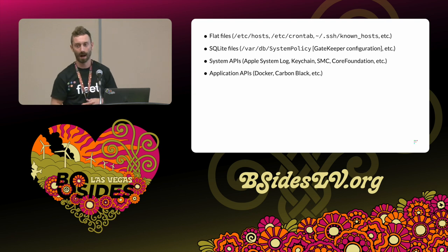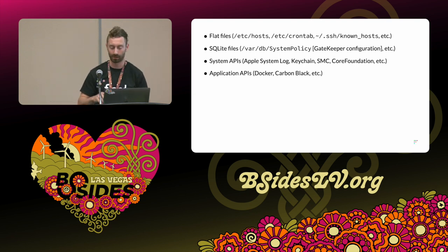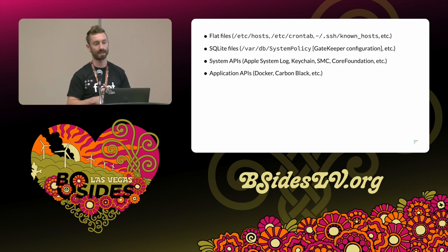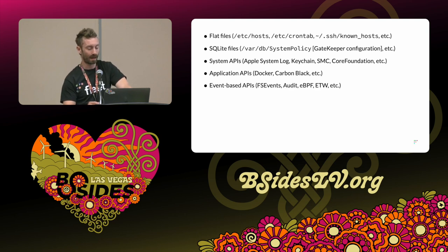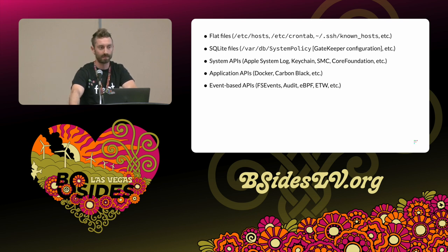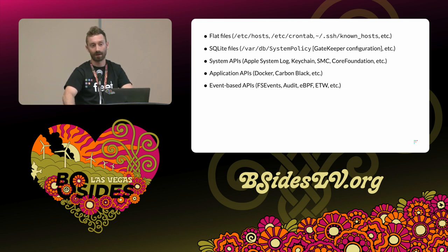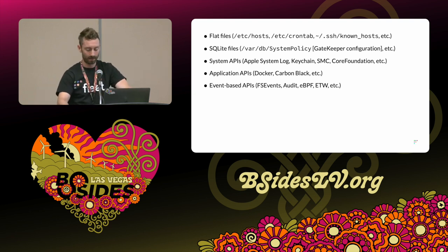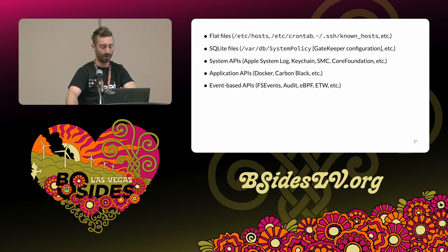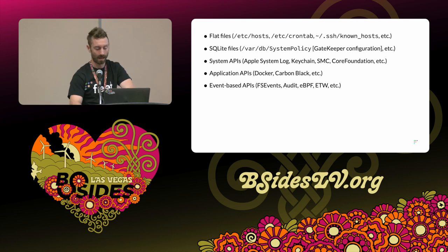There are also application APIs, so you can get things like status from Docker, from Carbon Black, and people have written extension tables that interact with things like CrowdStrike. And we can get event-based APIs — FS Events is used to do file integrity monitoring on some systems. The Linux audit and BPF subsystems are used to do process auditing and socket auditing. On Windows there's support for ETW, file integrity monitoring, and process auditing as well. And again, unified interface — there's a lot of code going on under the hood that you do not need to pay attention to in order to use OS Query effectively.